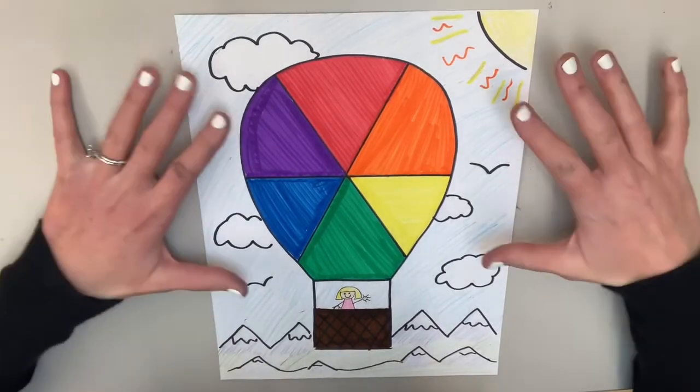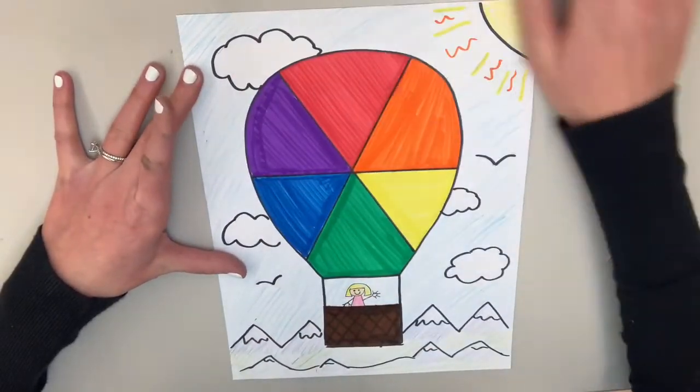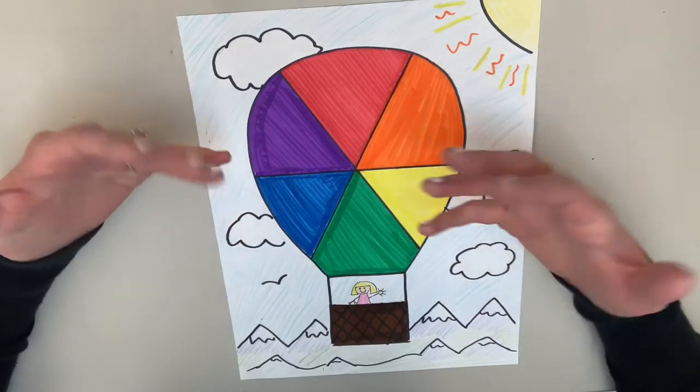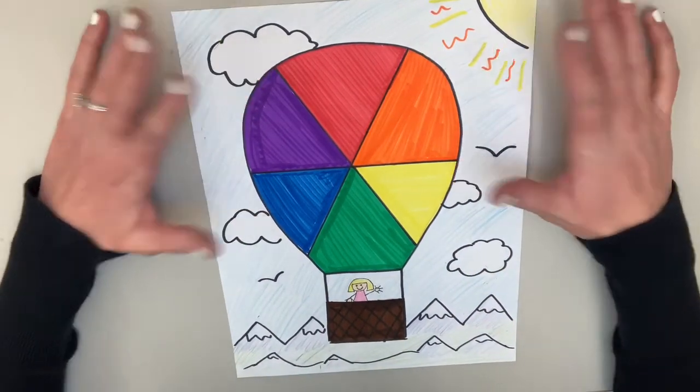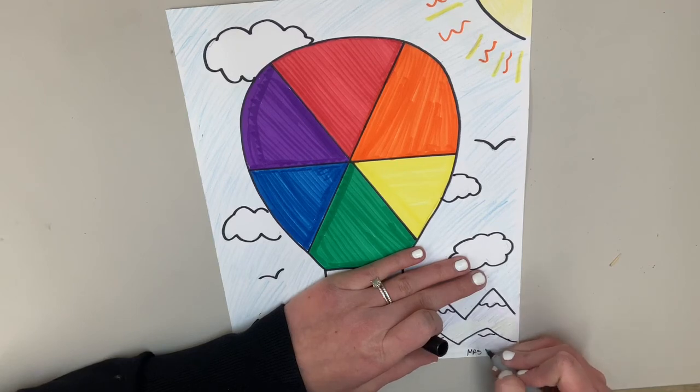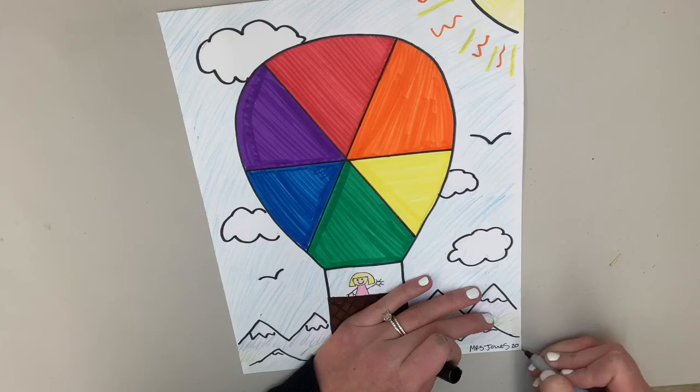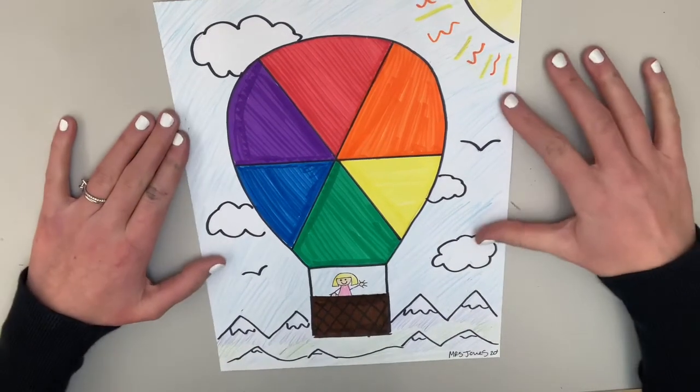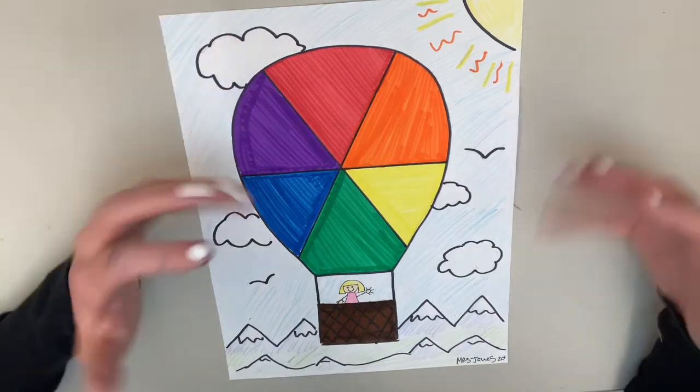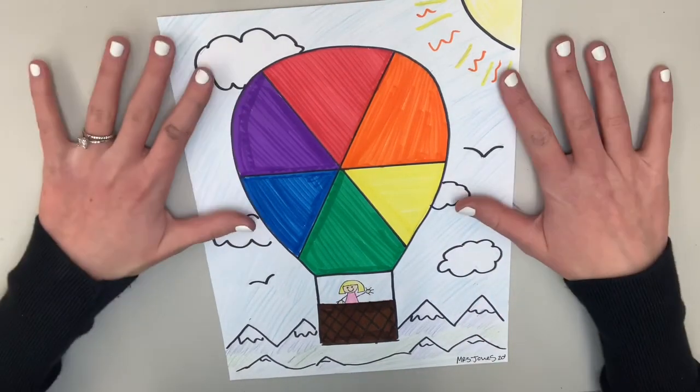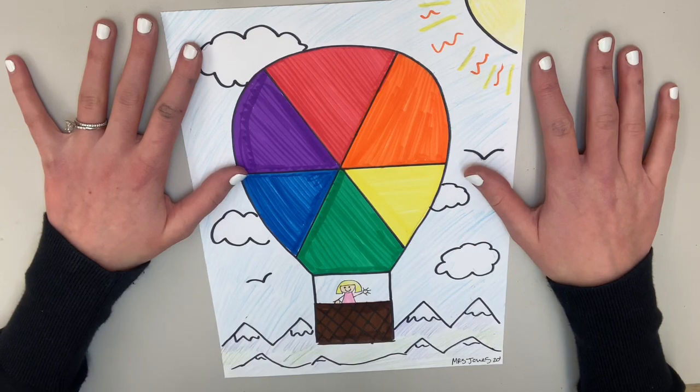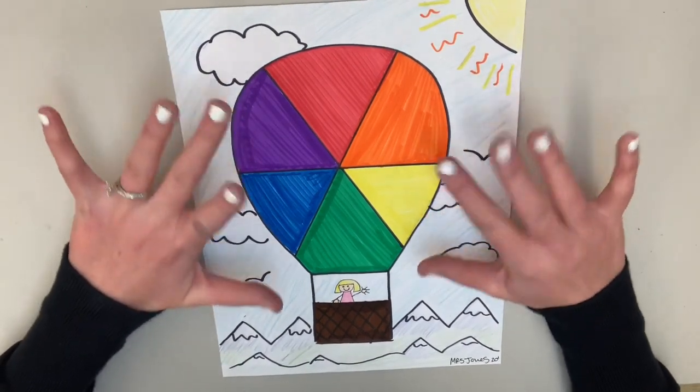All righty, so there you go. We've got our fun hot air balloon. We learned about the different colors and how we organize them in our color wheel. We talked about a way to remember that organization, which is Roy G. Biv. So now the last thing we got to do is just sign our name at the bottom. You can also maybe date it. I'm putting 20 next to it. So there we go. Beautiful, fun scene. We got to talk about different colors and organize them. But we also got to make a fun picture while we were at it. So thank you, everyone. I hope you really enjoyed this activity. And I am super excited to continue talking with you about the wonderful element of color. Thanks, everyone. Have a great week.